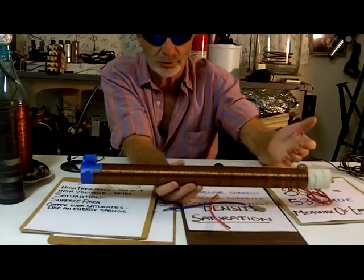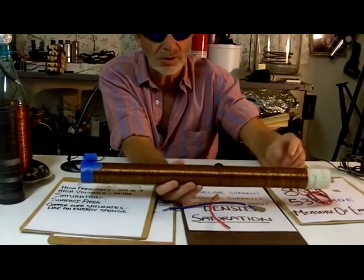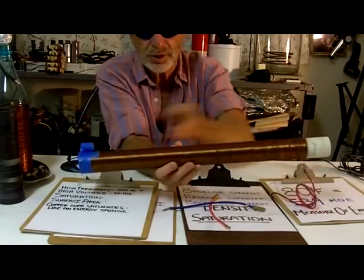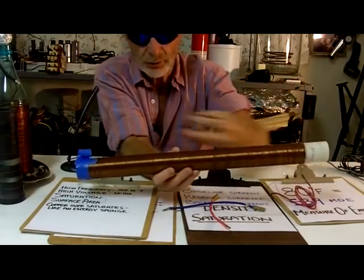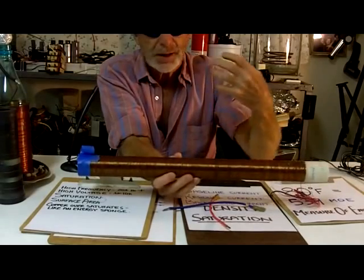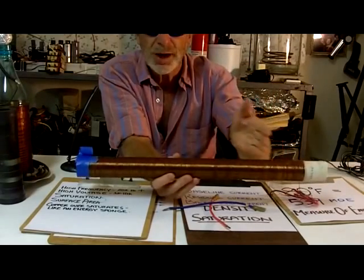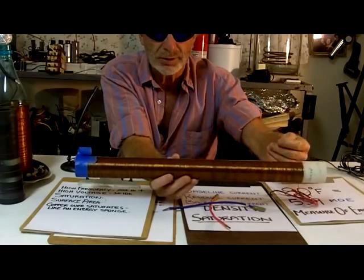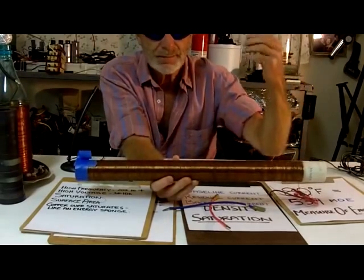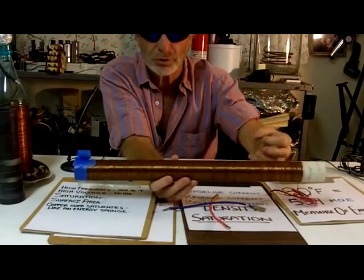We should call it saturation. So now you see where this current's coming from? You go through here 20,000 times a second and you're gathering up all this extra saturation. Now the second thing is voltage.